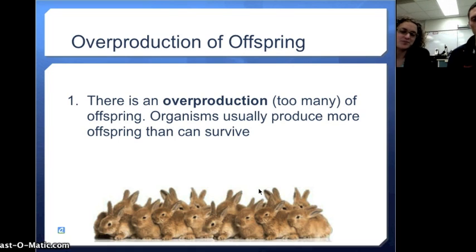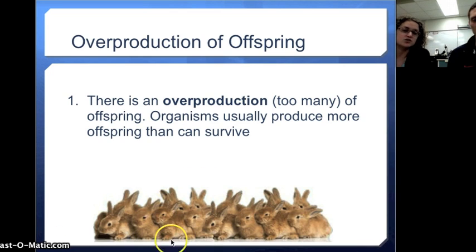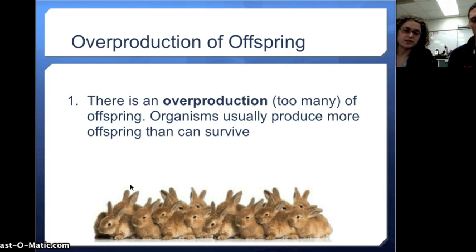Another thing to become familiar with: in most species, there's going to be an overproduction of organisms. Life is hard, and not everyone can survive. Within a group of offspring, there are going to be enough differences in their genes that some will be better fit to environmental conditions. That's why there's an overproduction of offspring — because not all of them can survive in the environment.